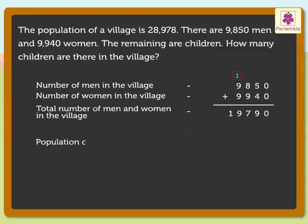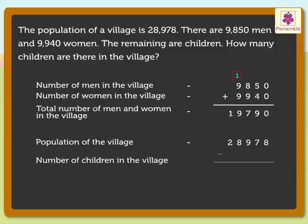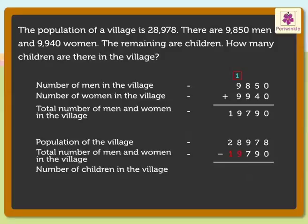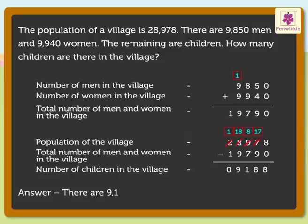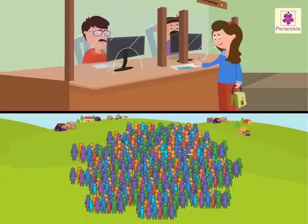We know that the population of the village is 28,978. Now, to find out how many children are there in the village, we need to subtract 19,790 from 28,978. Thus, there are 9,188 children in the village. Isn't it easy to solve addition and subtraction story problems?